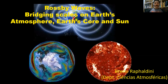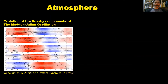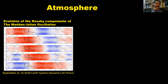My name is Breno and I'll talk about Rossby waves in the Sun, Earth's atmosphere, and Earth's core. Rossby waves are large-scale vertical flow patterns that arise due to the rotation of the planet, and they are known to be responsible for teleconnections.